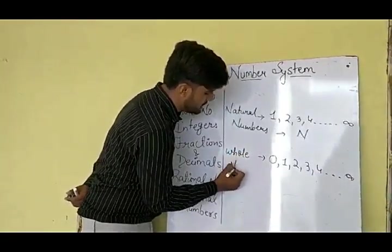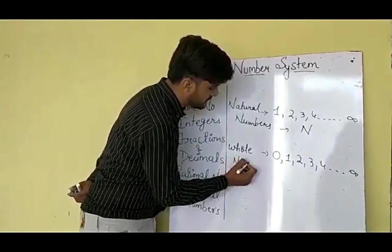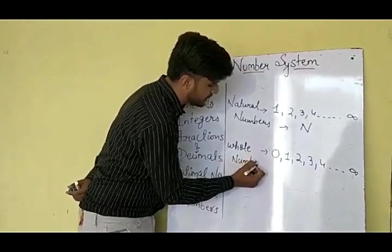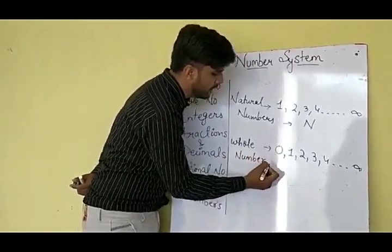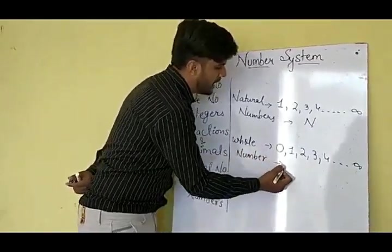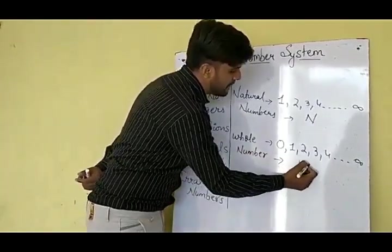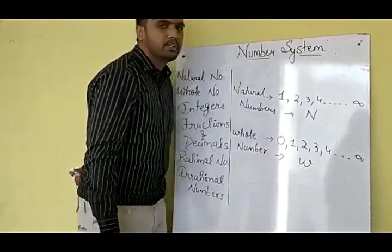Because 'whole' means all things included. All the things will be included in the whole, and it will be denoted by the symbol W.